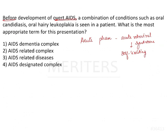The viral load decreases as the patient moves from the acute phase into the next stage — the chronic or latency stage. Here the viral load is less because of the actively functioning immune system, and therefore the patient does not show any symptoms; they remain asymptomatic. However, some patients will develop persistent generalized lymphadenopathy throughout their latency stage.